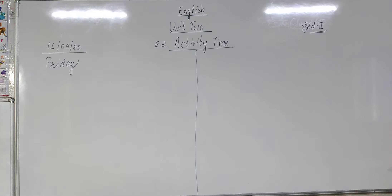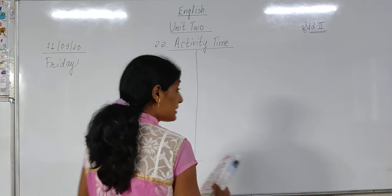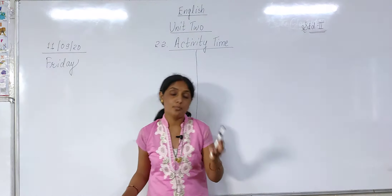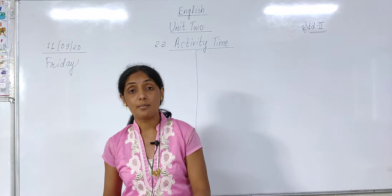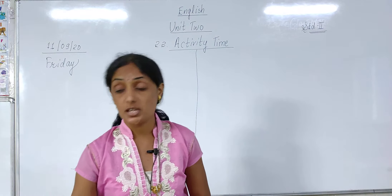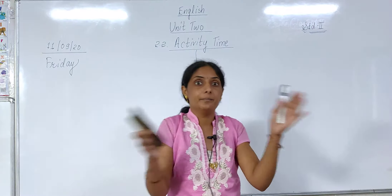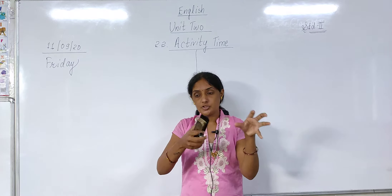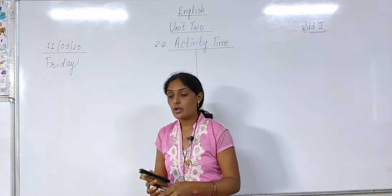Here it is told to write the naming words in the given groups. Do you remember naming words? Name of people, name of place, name of animal, name of birds, and names of things. You have to divide the words into groups.